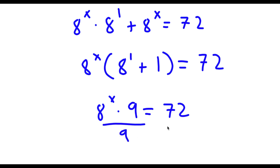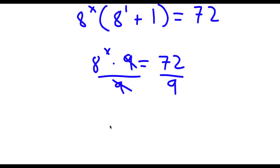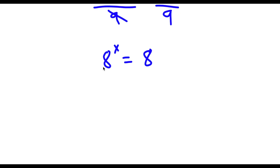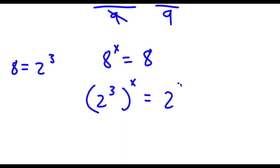Now I'm going to divide both sides by 9, so these two cancel out and I'm left with 8 to the power of x is equal to 72 divided by 9, which is 8. Now 8 is the same thing as 2 to the power of 3, so if I replace 8 with 2 to the power of 3, I get 2 to the power of 3 to the power of x is equal to 2 to the power of 3.